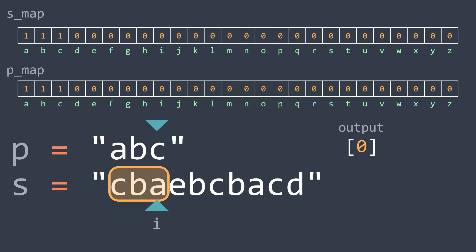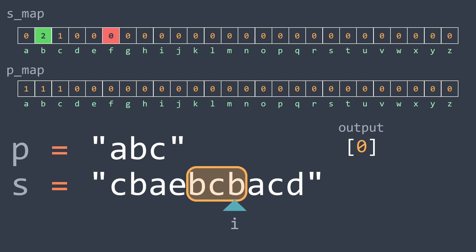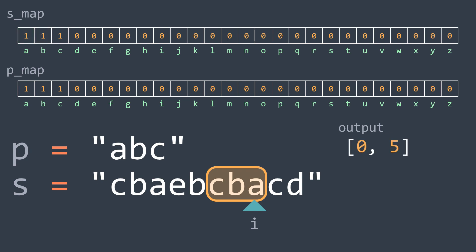Last step: we iterate through the remaining indexes while updating smap and comparing. At index 3, the character that went out of the window is c and the one that entered is e, so we decrement c and increment e in smap — not equal. Next: decrement b, increment b — still not equal. Next: decrement a, increment c — not equal. Next: decrement e, increment b — still not equal. Next: decrement b, increment a — they are equal, so we push i minus length of p plus 1, which is 5.